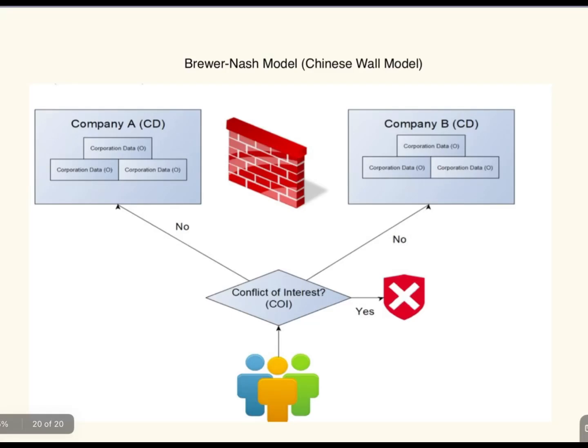Welcome to another quick CISSP session. In this session we are going to discuss the Brewer-Nash model, also called the Chinese Wall model. This is another important model, as we have discussed in our previous videos: the Biba model, Bell-LaPadula model, and Clark-Wilson model.